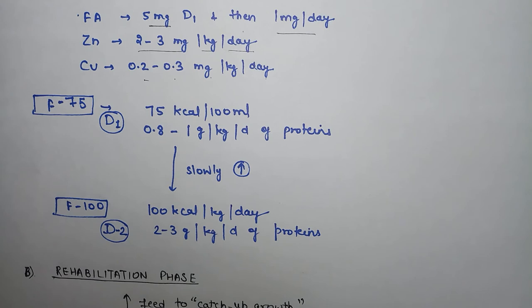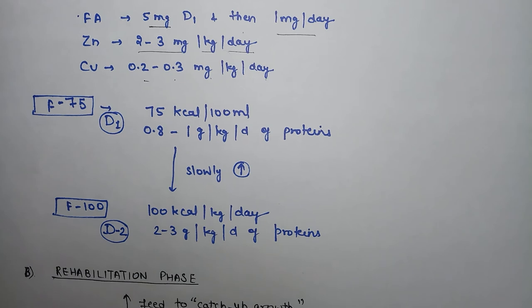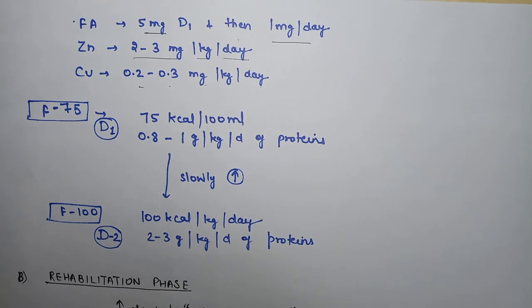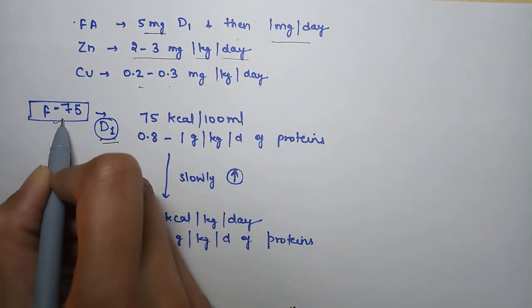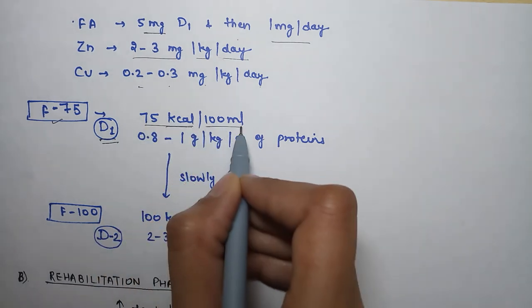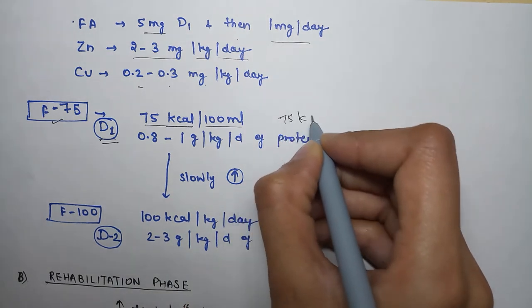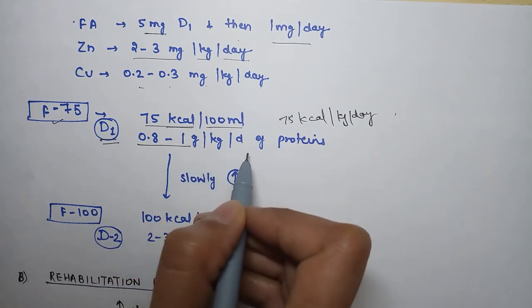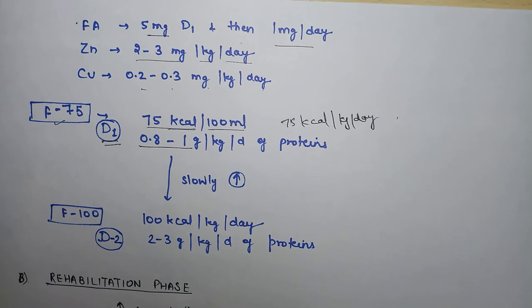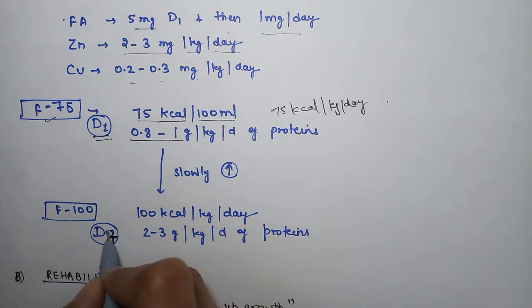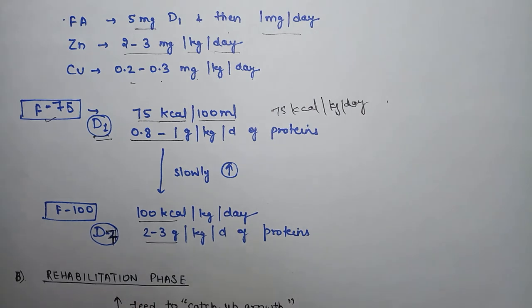After completing stabilization, initiate feeding as soon as possible. Start on day 1 with F75 - that's 75 kilocalories per kg per day. Slowly increase calories. By day 7, increase to 100 kilocalories per kg per day with 2-3 grams protein per kg per day.